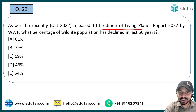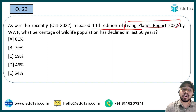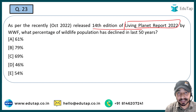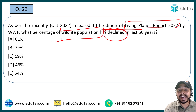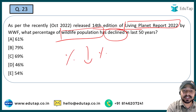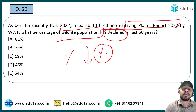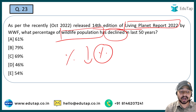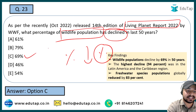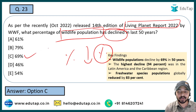The next question: the 14th edition of the Living Planet Report 2022 was released by WWF. What percentage of the wildlife population has declined in the last 50 years? Options are 61%, 79%, 69%, 46%, or 54%. The right answer is Option C — 69%.